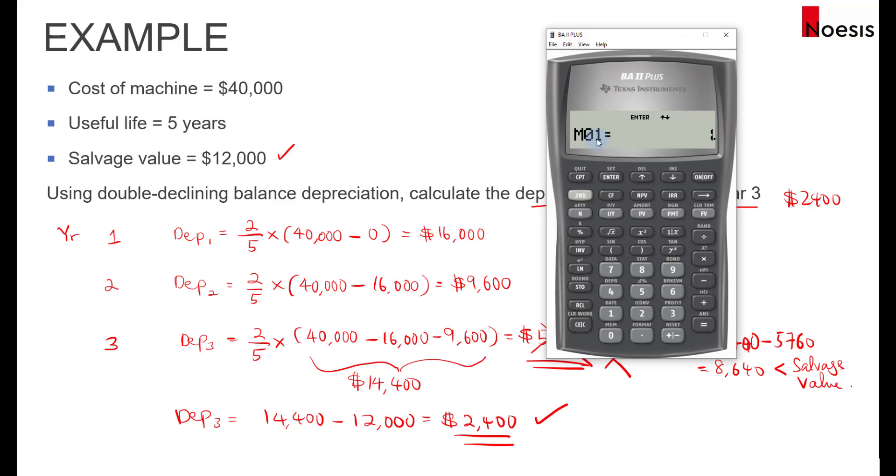Enter and then scroll down M01. Just leave it as one. That means you will start depreciating in the first month. And then CST is the cost, which is 40,000. And then SEL is the salvage value, which is 12,000. Once you key this in, the calculator will check and make sure that your net book value never drops below 12,000.